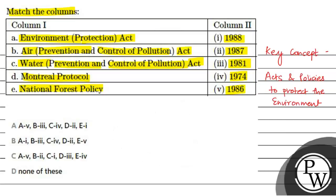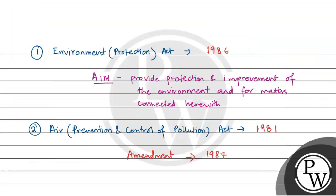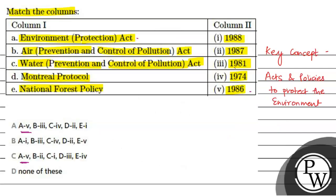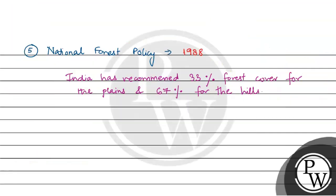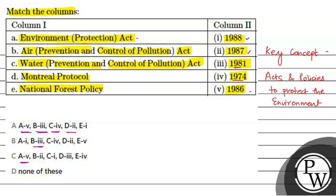Coming back to the question: Environment Protection Act was enacted in 1986, so that matches 1986. Air Prevention and Control of Pollution Act was given in 1981, so 1981 matches 3rd. Water Prevention and Control of Pollution was given in 1974, so 1974 is 4th. Montreal Protocol was given in 1987, so 1987 is 2nd. National Forest Policy was given in 1988, so 1988 is 1st. The final answer to this question is Option A. Hope you've understood well, best of luck.